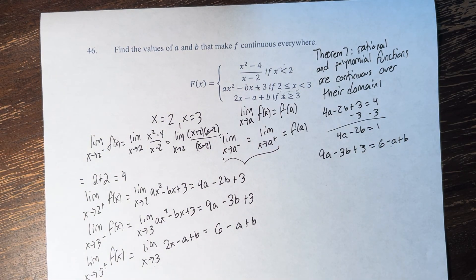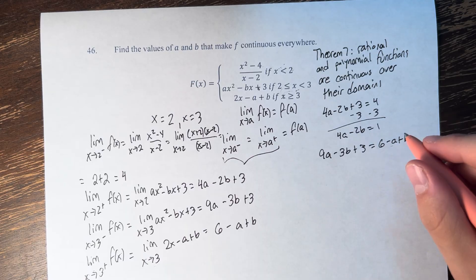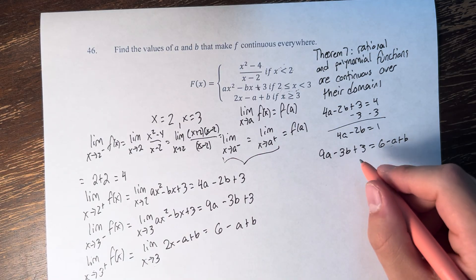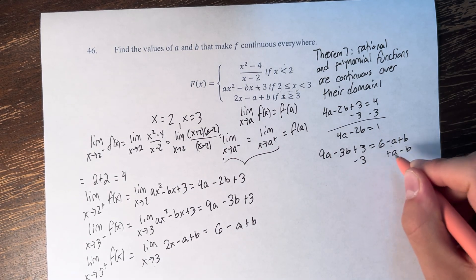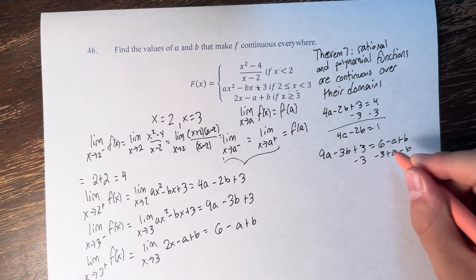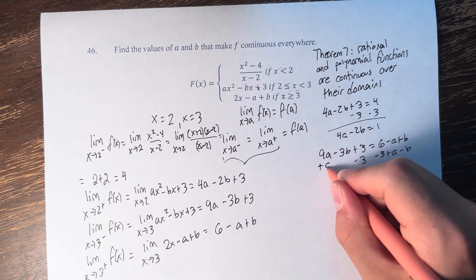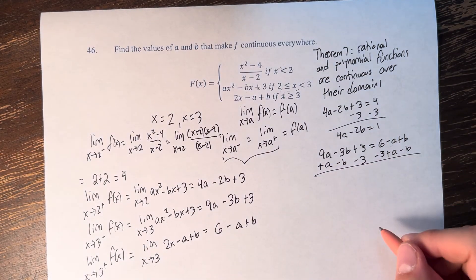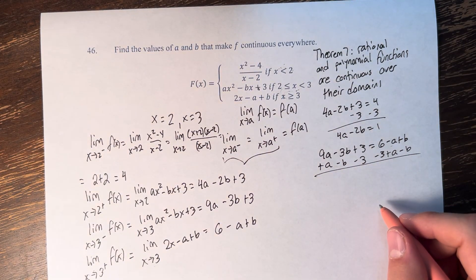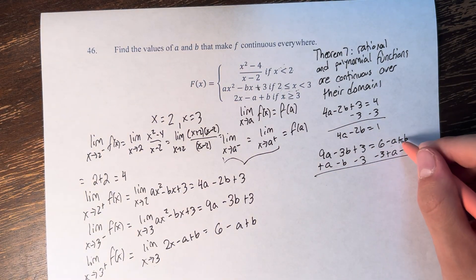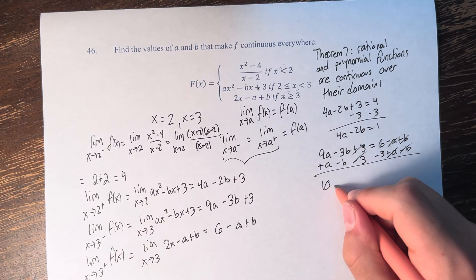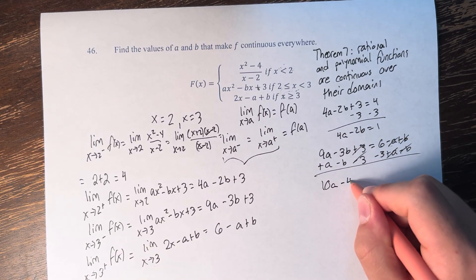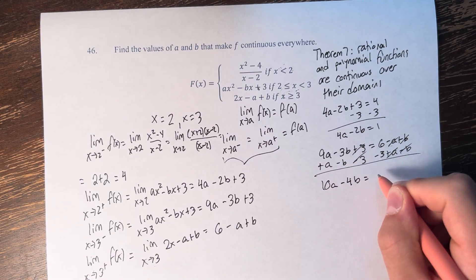For the function to be continuous at x equals 3, we set 9a minus 3b plus 3 equal to 6 minus a plus b. Subtracting 3, adding a, and subtracting b from both sides and simplifying gives us 10a minus 4b equals 3.